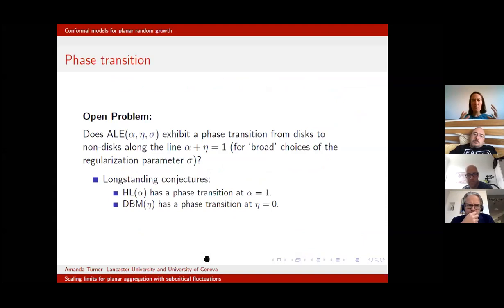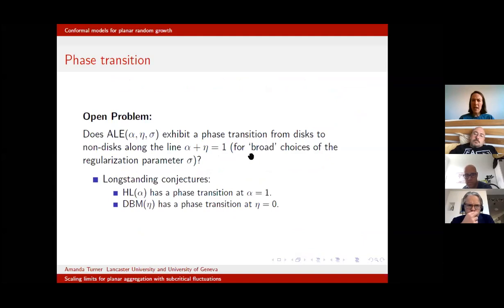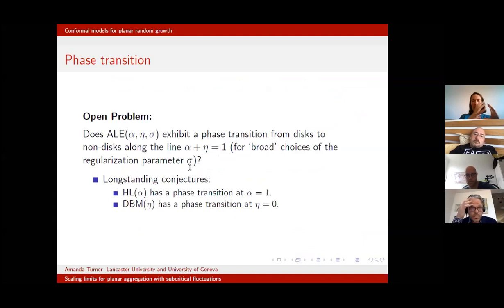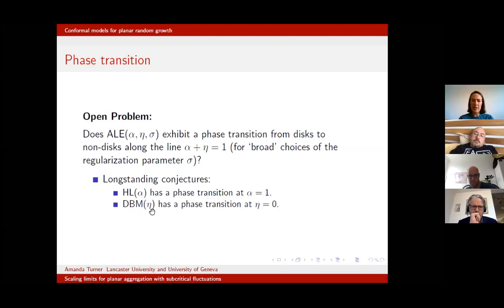What would we like to be able to prove? We would really like to prove that there's a phase transition from disks to non-disks along the line α + η = 1, for broad choices of the regularization parameter σ. We don't want to tune σ very carefully to get a disk; we want to show the model has something more fundamental causing breakdown along this line. This open problem ties in with longstanding conjectures about the Hastings-Levitov model — a phase transition at α = 1 — and dielectric breakdown models — a phase transition at η = 0.